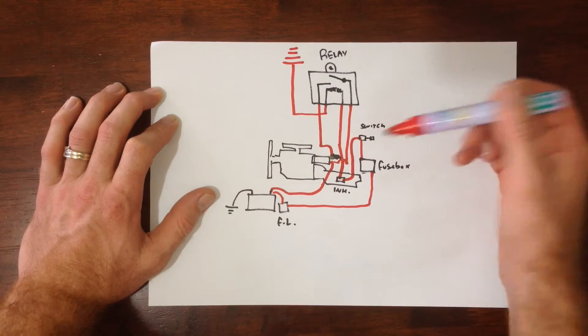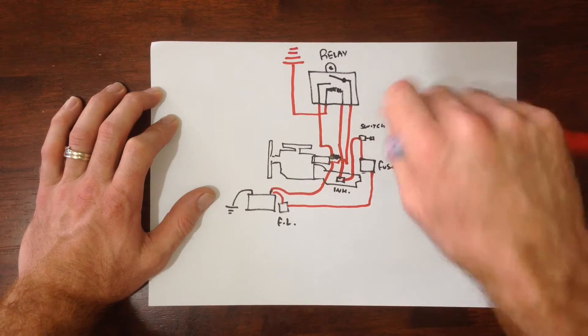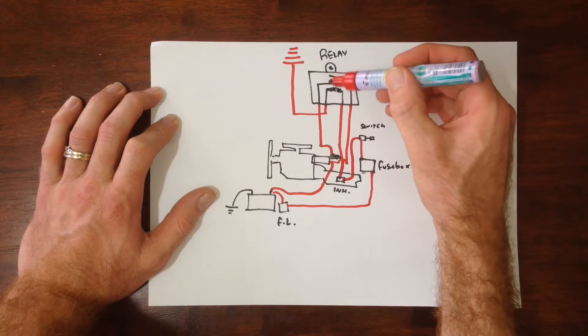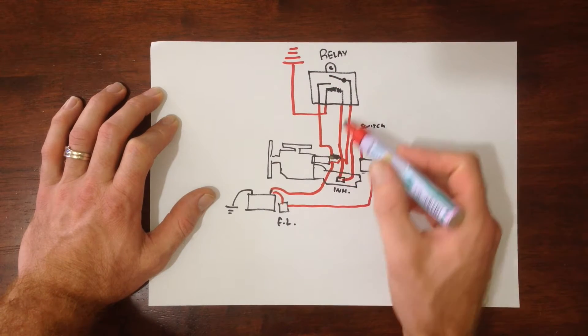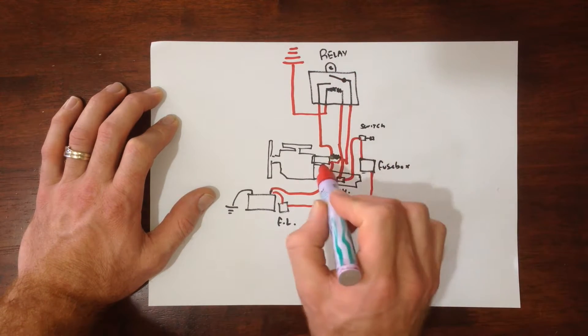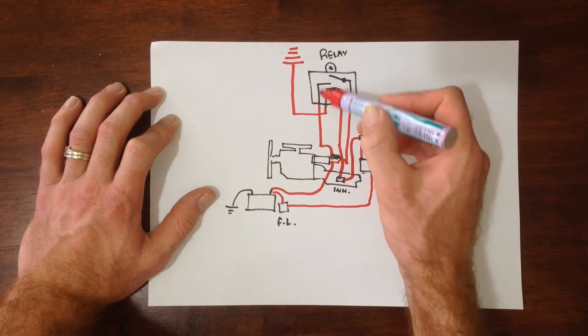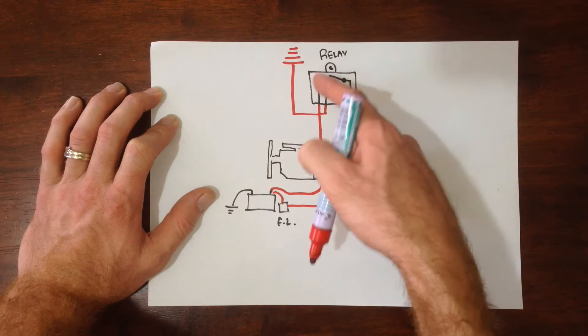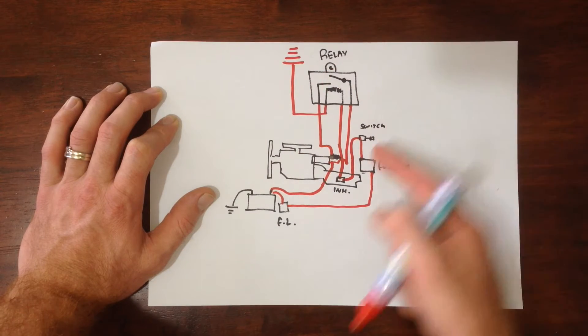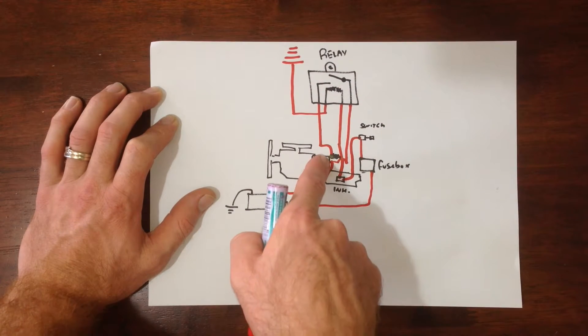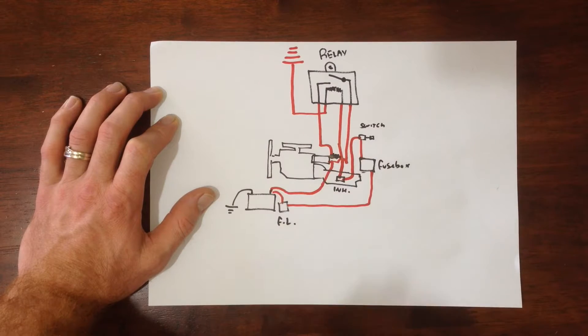So now, when we pull the relay in by turning the switch, these points close. And because this is really close to the starter motor and solenoid already, and we've got a nice big cable going through the points, as soon as those points pull in, we get a much better current to the solenoid.